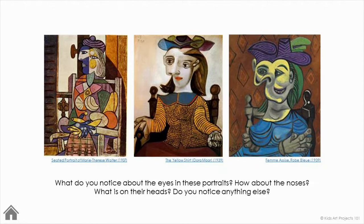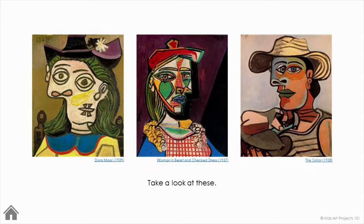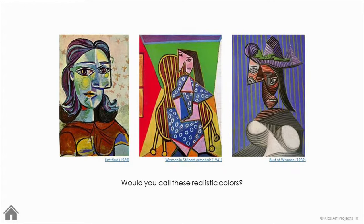What do you notice about the eyes in these portraits? How about the noses? What is on their heads? Do you notice anything else? Take a look at these. What kind of observations can you make about the colors you see? Would you call these realistic colors? Do you see patterns? What kinds?